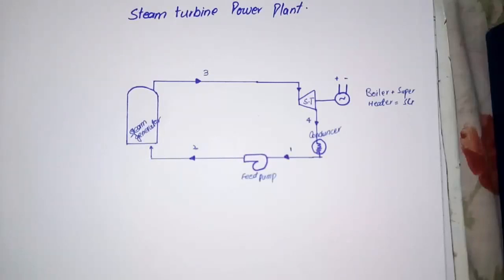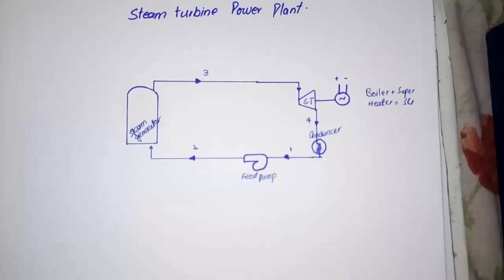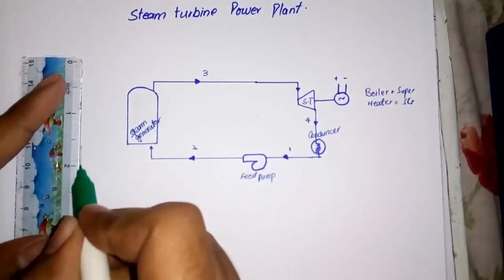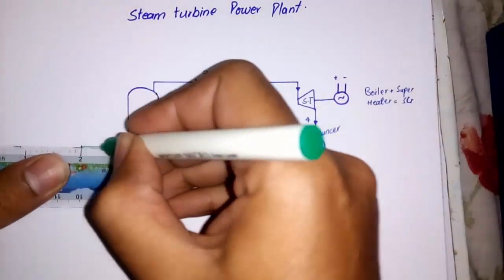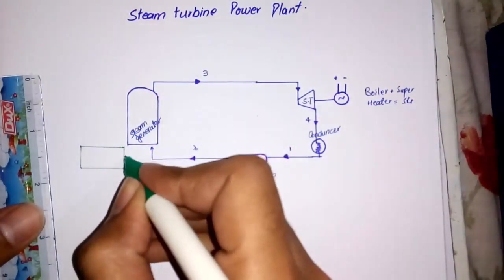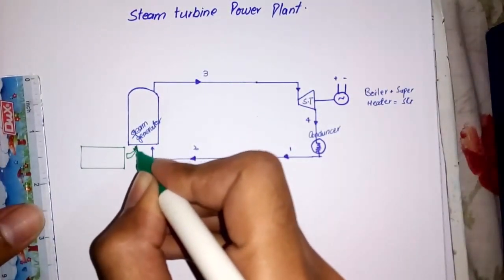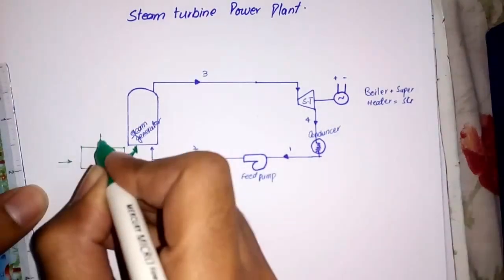Usually there are four main circuits in a steam power plant: number one, feed water and steam flow circuit; number two, coal and ash circuit; number three, air and gas circuit; number four, cooling water circuit. The lines you are seeing in this figure represent the feed water and steam flow circuit. The coal and ash and air and gas circuits are connected to the furnace, which is the source of heat energy to the steam generator.